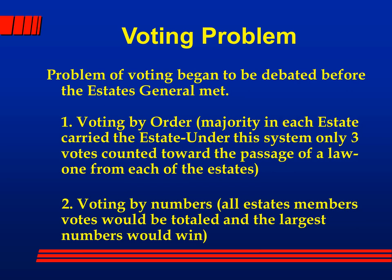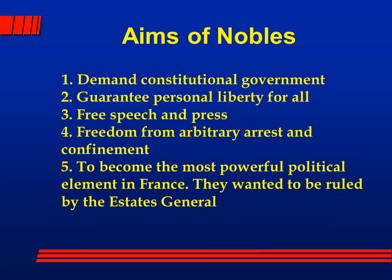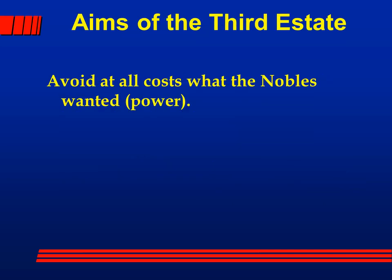The aims of the nobles looked pretty good: demand constitutional government, reduce the king's power, guarantee personal liberty for everyone, provide freedom of speech and a free press, and allow freedom from arbitrary arrest — so lettres de cachet would disappear. In return, they wanted to become the most powerful political element in France, ruling through the Estates General as English nobles ruled through parliament. But the third estate's aim was simple: avoid at all costs what the nobles want — don't give them power. We now have the polarization of the Estates General.